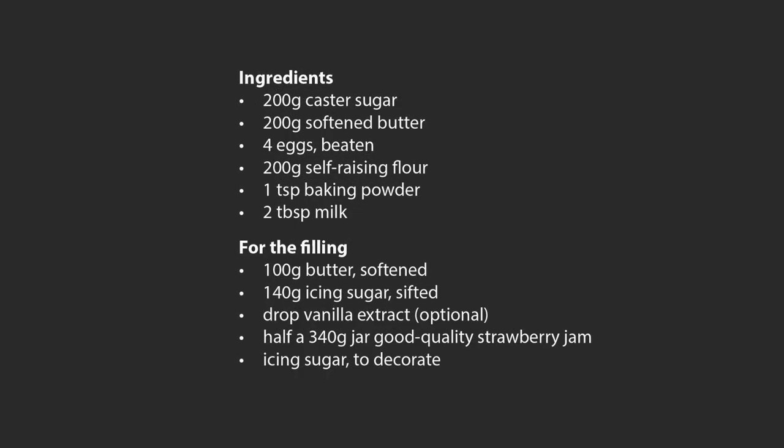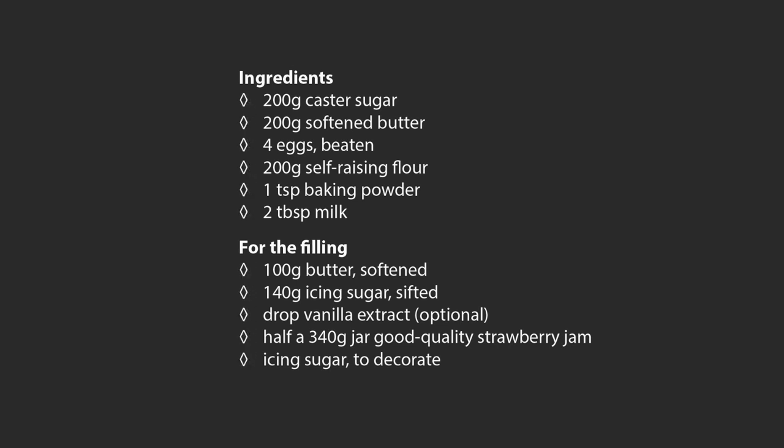Bulleted lists allow type to be set apart from the main body of text without the need to imply a chronological or hierarchical order that a numbered list might. Bullet characters are most commonly small dots set in the same color as the listed item, however many styles of bullet characters are used today, some more successfully than others.